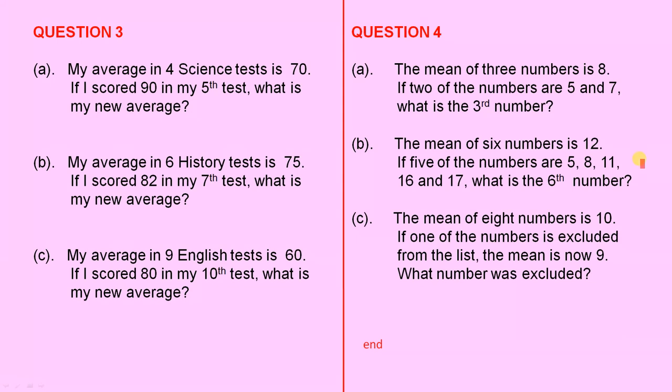Part B: The mean of 6 numbers is 12. If 5 of the numbers are 5, 8, 11, 16, and 17, what is the 6th number?